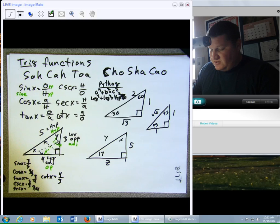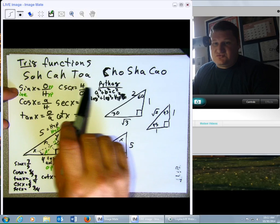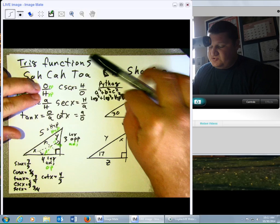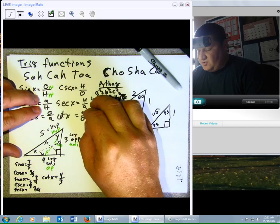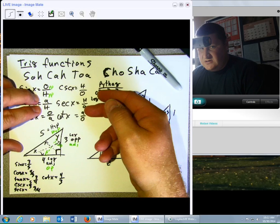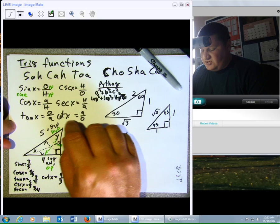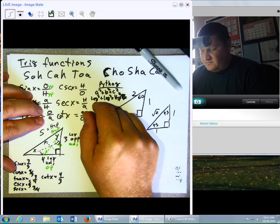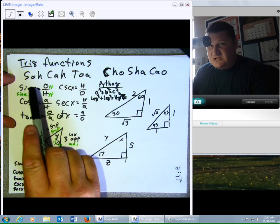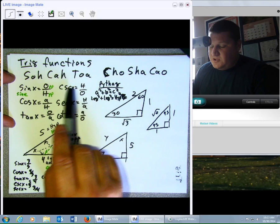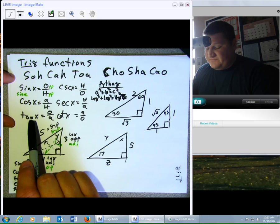So, you'll notice sine always goes with cosecant, they are reciprocals of one another. Cosine goes with secant, they are also reciprocals of one another. Tangent goes with cotangent, they are reciprocals of one another. So those go together, everything has a co-. Sine goes to, ironically, cosecant. Cosine goes to secant. Tangent goes to cotangent.